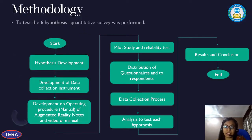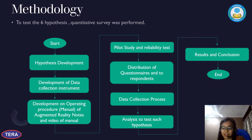To test the six hypotheses, a quantitative survey was performed. Once the hypotheses were developed, the next stage was to develop the data instrument — the questionnaire — and also an operating manual and video for the augmented reality notes. Lecturers were introduced to this product and needed to refer to the operating manual in order to use the AR notes. After using the product, the questionnaire was distributed. A pilot study was conducted to check reliability, followed by data collection and analysis for each hypothesis, leading to the conclusion.